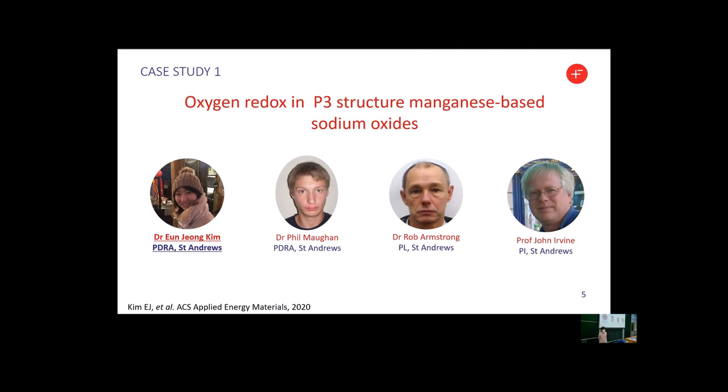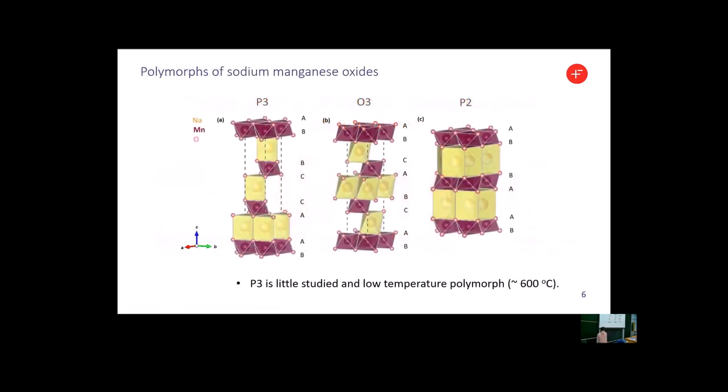The first case study is about oxygen redox in P3-structure manganese-based sodium oxides. P3-structure is one of polymorphs of sodium manganese oxides, where sodium ions are occupied in trigonal prismatic sites.